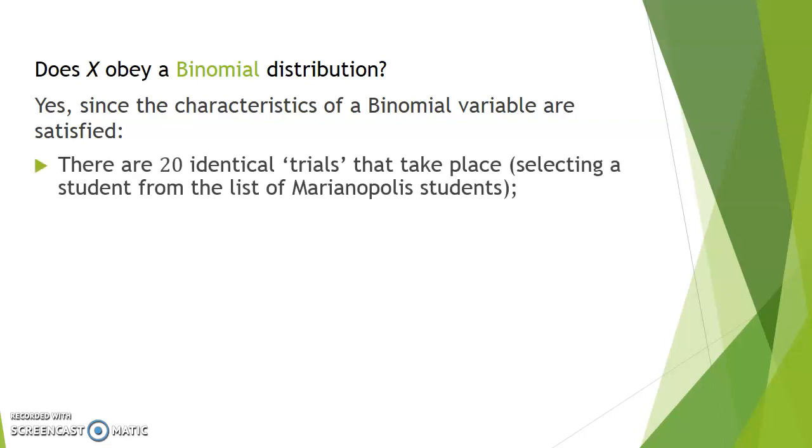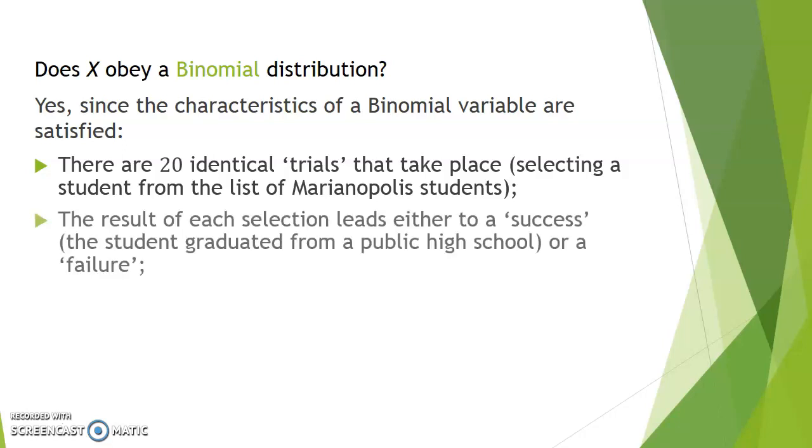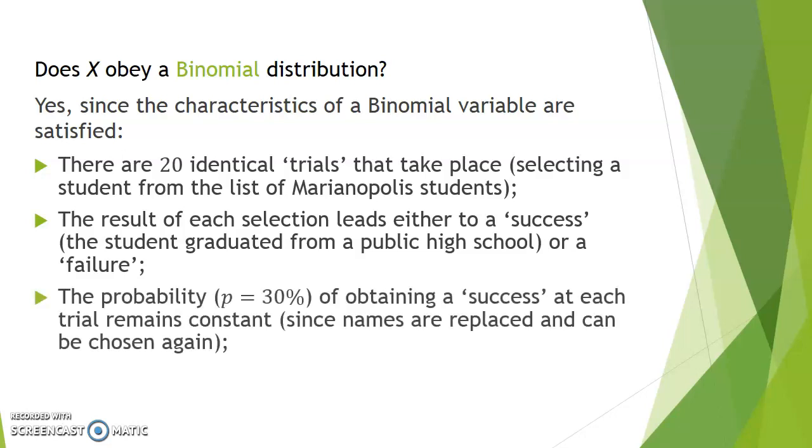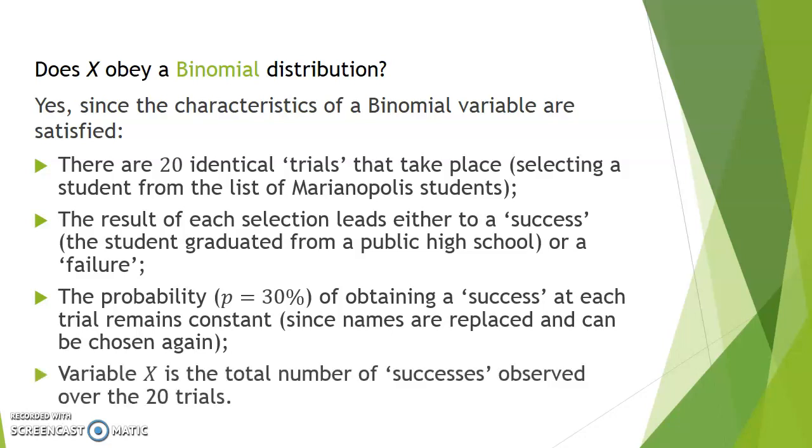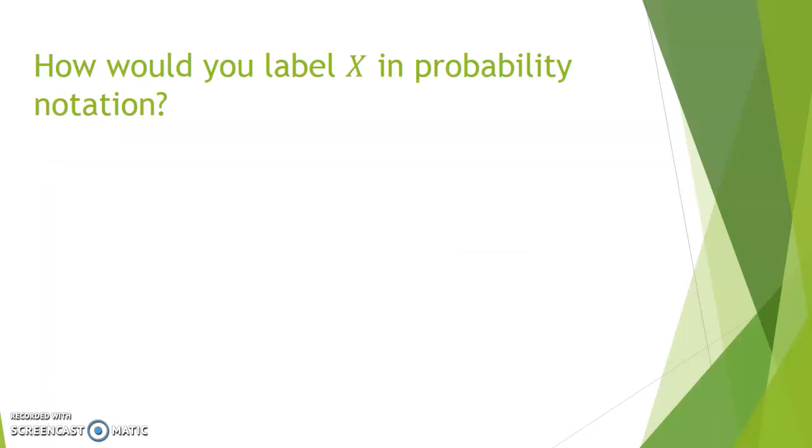Furthermore, can we assume X follows a binomial distribution? Well absolutely, because it has the characteristics of a binomial. There are 20 identical trials taking place, which is to select students from the list of Marianopolis students. Every time we select a student, an outcome of success or failure will be observed: either he or she graduated from a public high school or didn't. Because the names are replaced, the probability of obtaining a success remains constant at every trial. And finally, our goal is to count the number of successes over our 20 trials. How would you label X in probability notation? In this case, 20 trials with 0.3 probability.